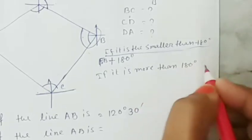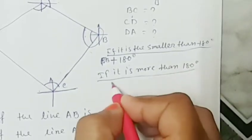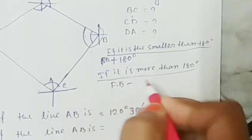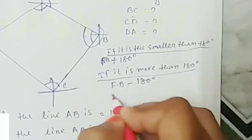If it is more than 180 degrees, we just simply subtract 180 from the forebearing.